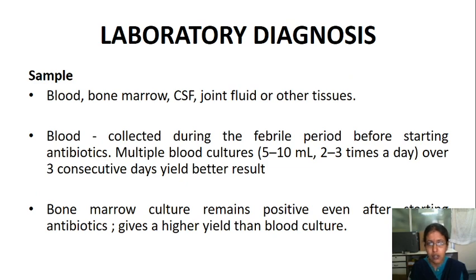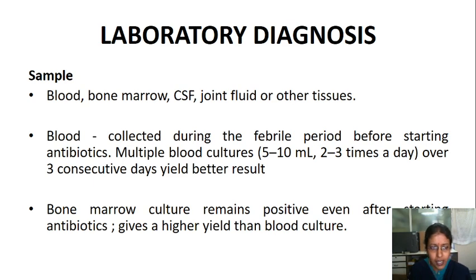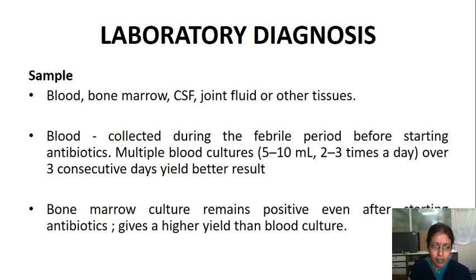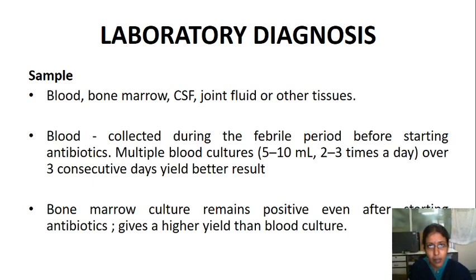For lab diagnosis, samples include blood, bone marrow, cerebrospinal fluid, joint fluid, or other tissues. Blood should be collected during the febrile period before starting antibiotics. Multiple blood cultures over 3 consecutive days are taken — 5 to 10 mL collected 2 to 3 times a day for 3 consecutive days. This is the standard protocol for blood collection in brucellosis.